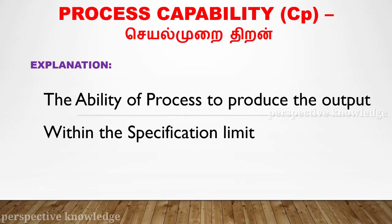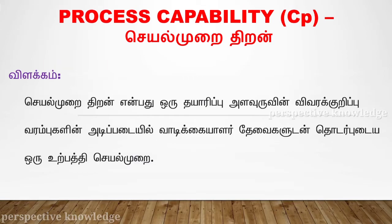First, process capability — this is shortened to CP. The explanation of process capability is the ability of a process to produce the output within the specification limit. For example, there is a manufacturing industry and the industry is able to produce all components. The analysis is the process capability, which is purely based on the process of the components.